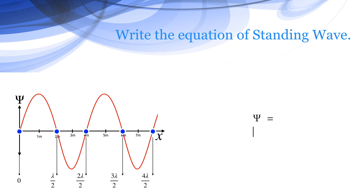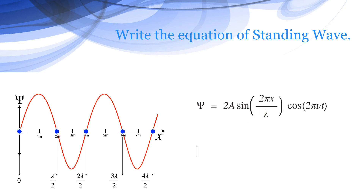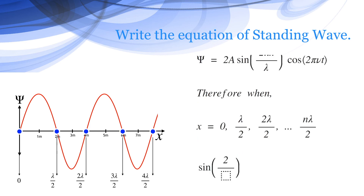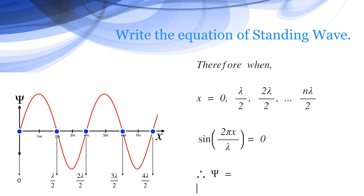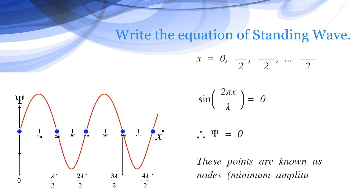The equation for the standing wave is psi equals 2A sin(2pi x / lambda) cos(2pi nu t). When x equals 0, or lambda/2, or 2 times lambda/2, or n times lambda/2, then sin(2pi x / lambda) always becomes 0 and therefore psi becomes 0. These points are known as nodes — they have minimum amplitude.